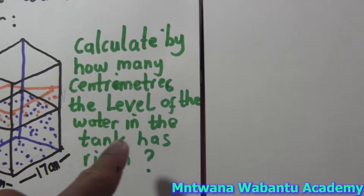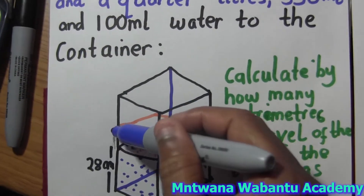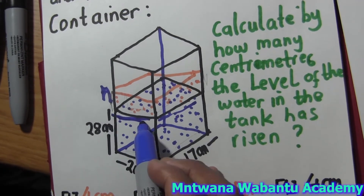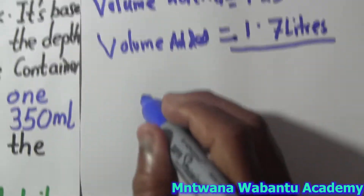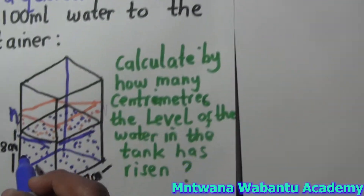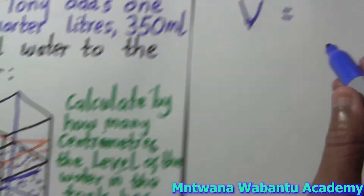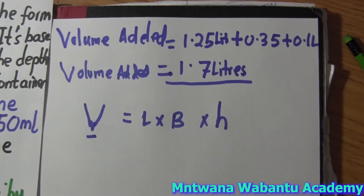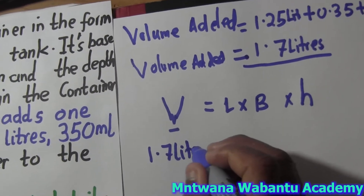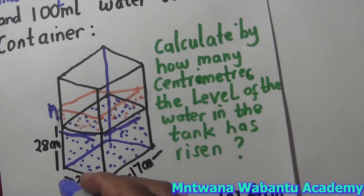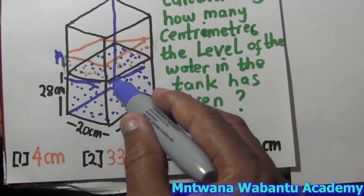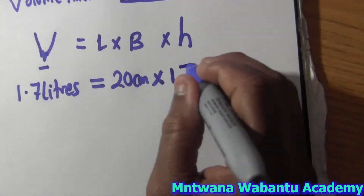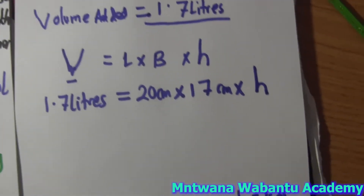Now they want to calculate how many centimeters the water level in the tank has risen — that new height. I don't know the new height, but I know the base dimensions. So I'm going to use the formula: Volume = Length × Width × Height. The volume of water added is 1.7 liters. Length equals 20 centimeters, and width equals 17 centimeters.